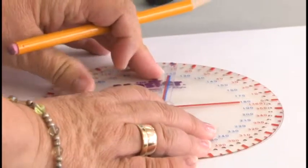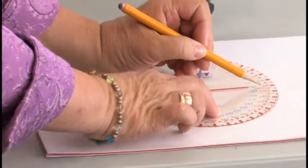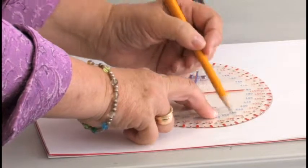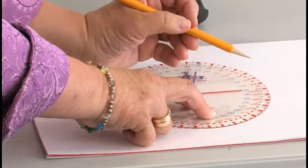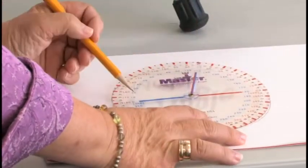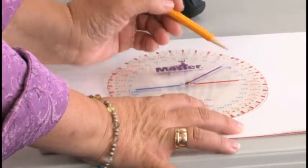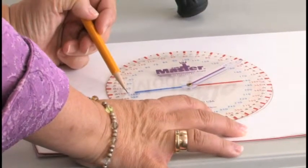So we're going to trace the circumference. Now the master angle has 0 to 360 degrees counterclockwise in red, and then it has 0 to 360 degrees in blue going clockwise.